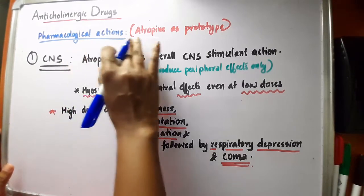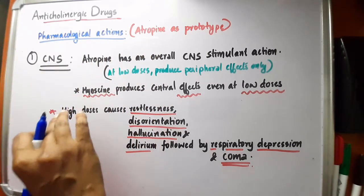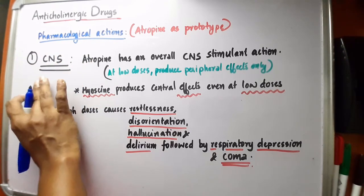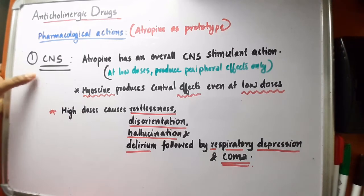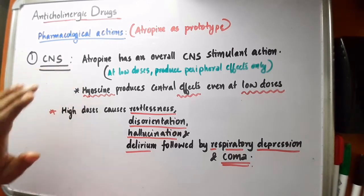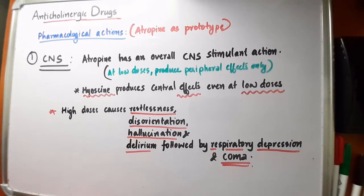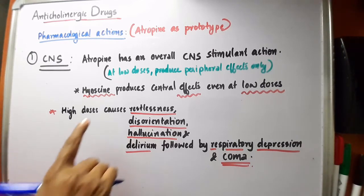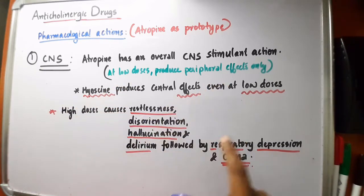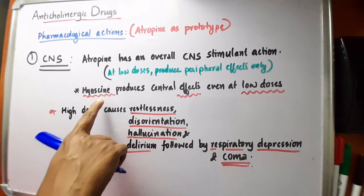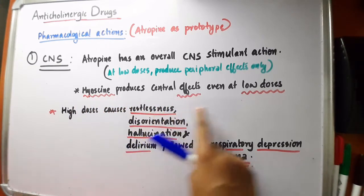Now let us study the pharmacological actions of anticholinergic drugs on the CNS. Atropine has an overall CNS stimulant activity. At low doses, they produce peripheral effects only due to restricted entry into the brain because of the blood-brain barrier. However, hyoscine can produce central effects even at low doses.